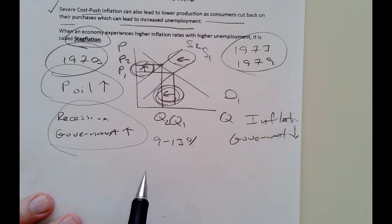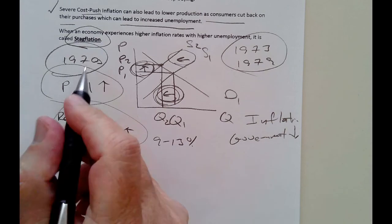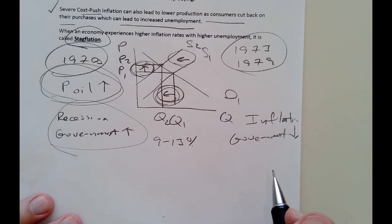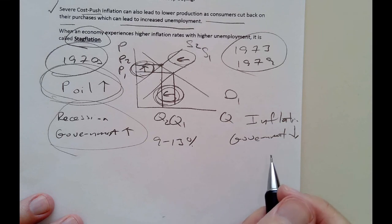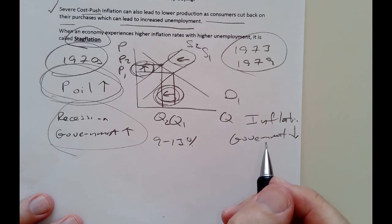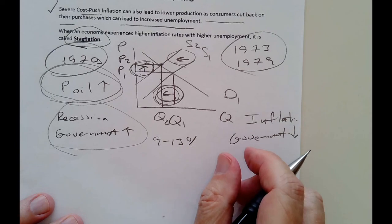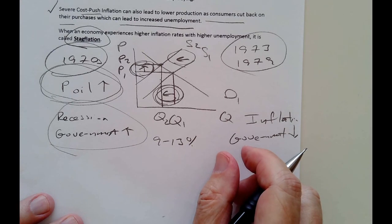The only real solution to stagflation was to reverse its cause: higher oil prices. Presidents Ford and Carter in the 1970s pushed through initiatives to make the country more energy efficient and lower demand for oil. By 1981, our oil consumption was much lower than it was at the start of the crisis in 1973. That is inflation. Next I'll discuss economic growth in Chapter 7, which will be the last topic for that chapter.